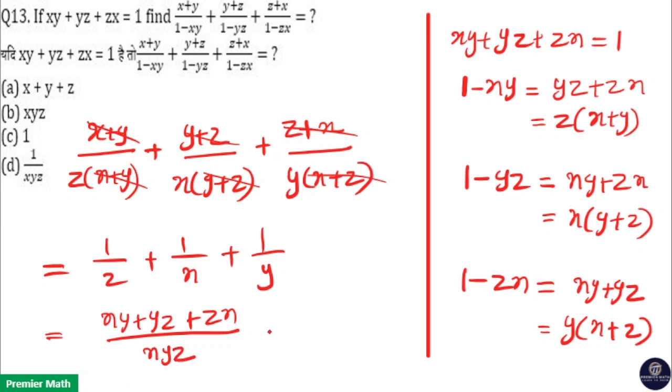Using the same method, 1/z + 1/x + 1/y equals (xy + yz + zx) / xyz. Since xy + yz + zx = 1, the denominator is xyz, so the answer is 1/xyz.